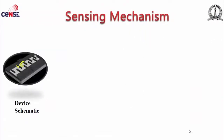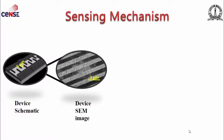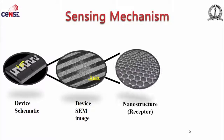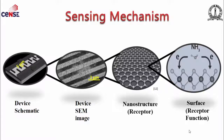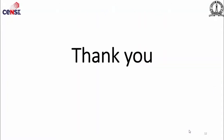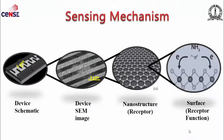For the device, we used standard interdigitated electrodes with a finger gap of 5 microns, and the material is drop-cast on these IDEs. The nanostructure of WS2 is hexagonal and acts as a receptor where charge transfer takes place. Since ammonia is a reducing gas and an electron donor, it gives electrons to the conduction band of WS2, increasing conductivity and carrier concentration. On purging the gas, current increases — that is the sensing response.